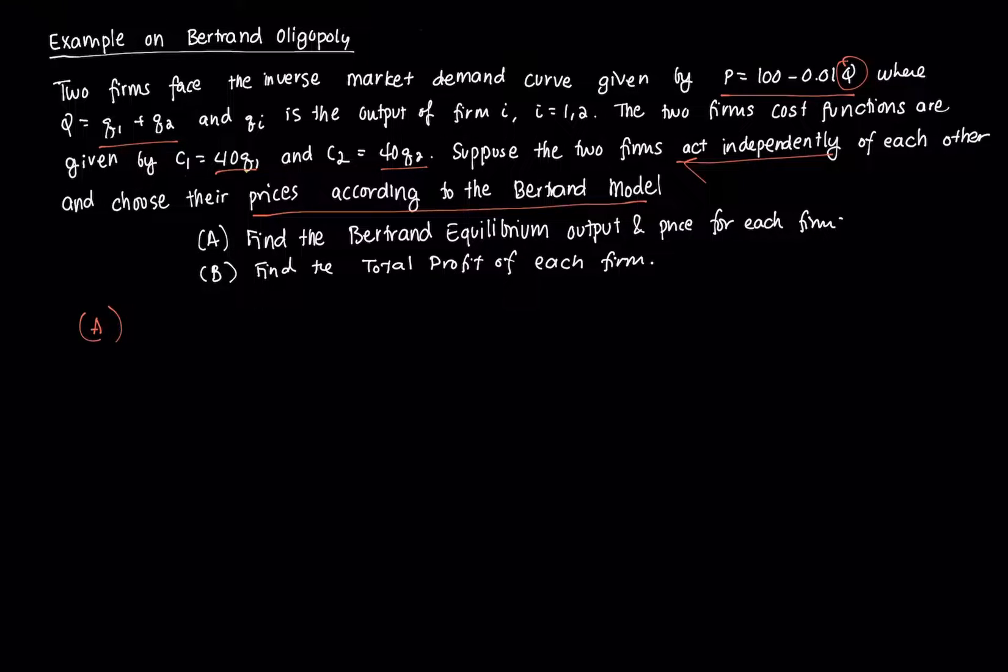in order for us to find the equilibrium output and price of each firm, we're going to compute marginal cost because we know that at the Bertrand equilibrium, the proper condition is that P1 equals P2 equals MC, which is your marginal cost, assuming that we have a homogenous good case.